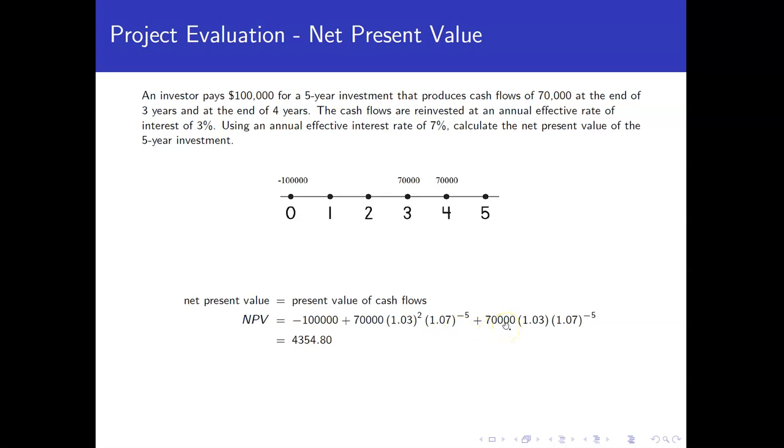Likewise, we'll take the seventy thousand dollars at time four, move it forward one year at three percent because it's getting reinvested at three percent, and then pull it back to time zero at the seven percent interest value. And when we do that we get a net present value of forty three fifty four eighty.